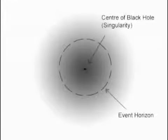The area which marks a distance from the center of the black hole from which light cannot escape is called the event horizon.